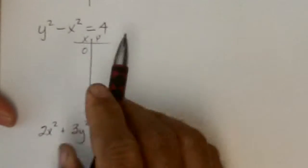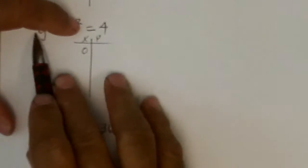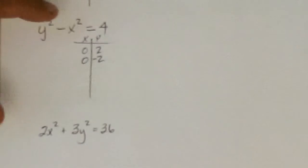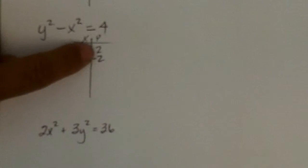So, if I let x be 0, y squared equals 4 would mean it could be 2 or negative 2 when x is 0. So, I got two intercepts there for the y-axis.